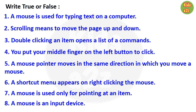Here kids need to write true or false beside each statement. First one: a mouse is used for typing text on a computer — false. Number 2: scrolling means to move the page up and down — true. Number 3: double clicking an item opens a list of commands — false.